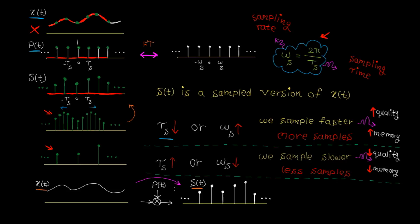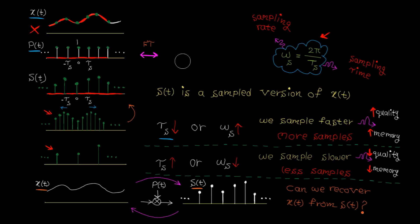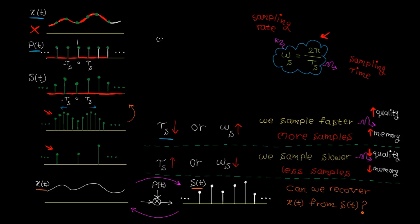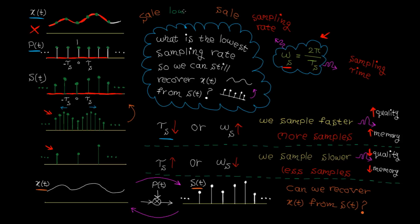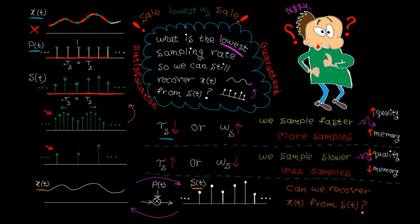Here is the golden question that forms the foundation of everything in digital signal processing: can we recover the continuous signal x(t) from its samples s(t)? The answer depends entirely on the sampling rate. A better way to ask is: what is the lowest sampling rate so we can still recover x(t) from its samples? We want the minimum ωs to save memory while not losing any critical information. The answer to this golden question is called the Nyquist rate.